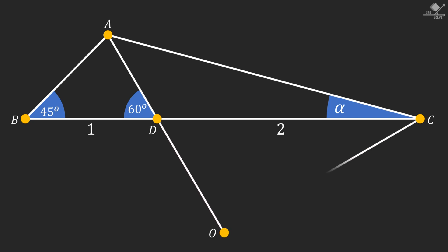First, extend line segment AD and drop a perpendicular to this line segment from point C. We can see that this angle is 60 degrees since the opposite angle is also 60 degrees.